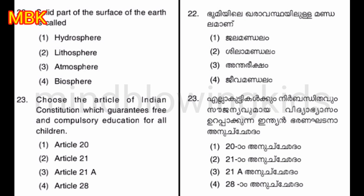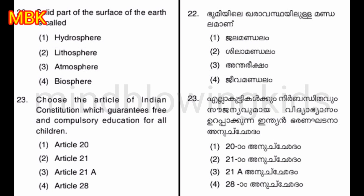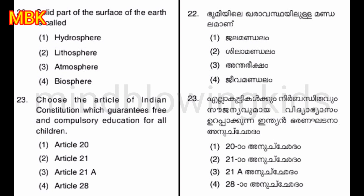Choose the article of Indian Constitution which guarantees free and compulsory education for all children. Option one: Article 20. Option two: Article 21. Option three: Article 21A. Option four: Article 28. The answer is option three — Article 21A.